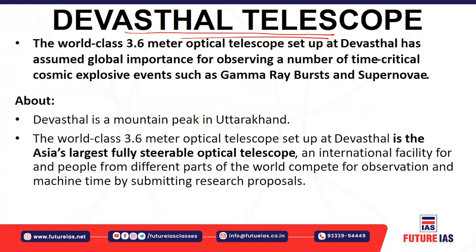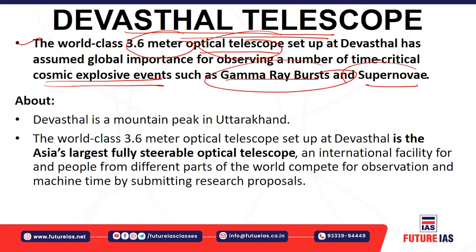The next topic is the Devastal Telescope. The Devastal telescope is a world-class optical telescope located at the Devastal mountain peak in Uttarakhand. It is a 3.6-meter optical telescope that has assumed global importance for studying cosmic events, gamma-ray bursts, and supernovae. It is placed at a high altitude to reduce interference from developmental activities.